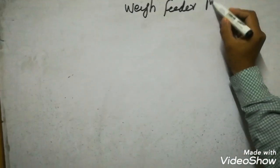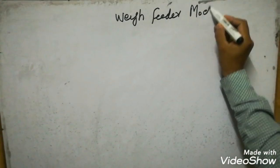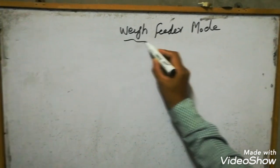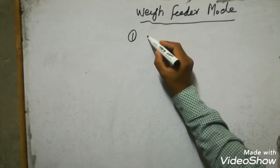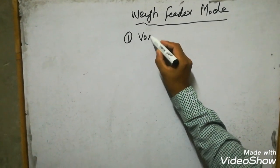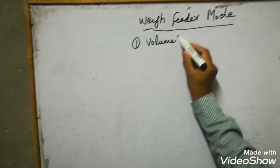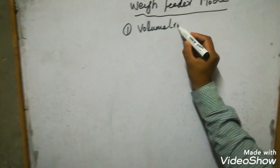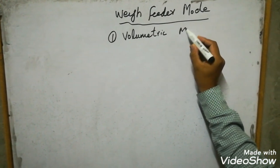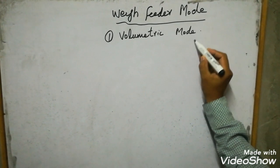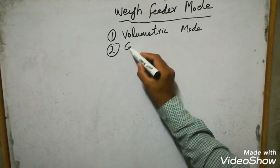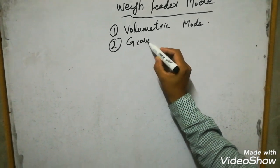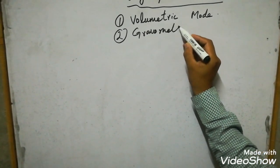This video is about the wave feeder modes. As you know, there are two different modes in the wave feeder controller: one is volumetric mode and the other is gravimetric mode. We will see what the differences between volumetric mode and gravimetric mode are, and how these two modes work.